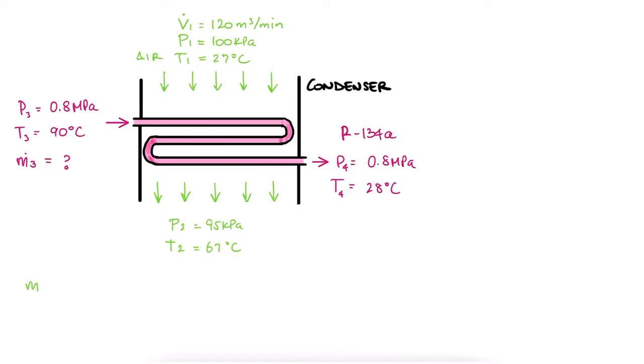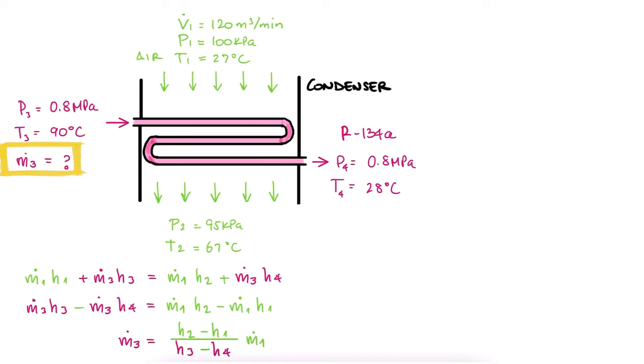Starting with the simplified energy conservation equation we derived for heat exchangers and using mass conservation, we see that we can solve for the mass flow rate of the refrigerant and notice that we're going to have to find all four specific enthalpy values and the mass flow rate for air.